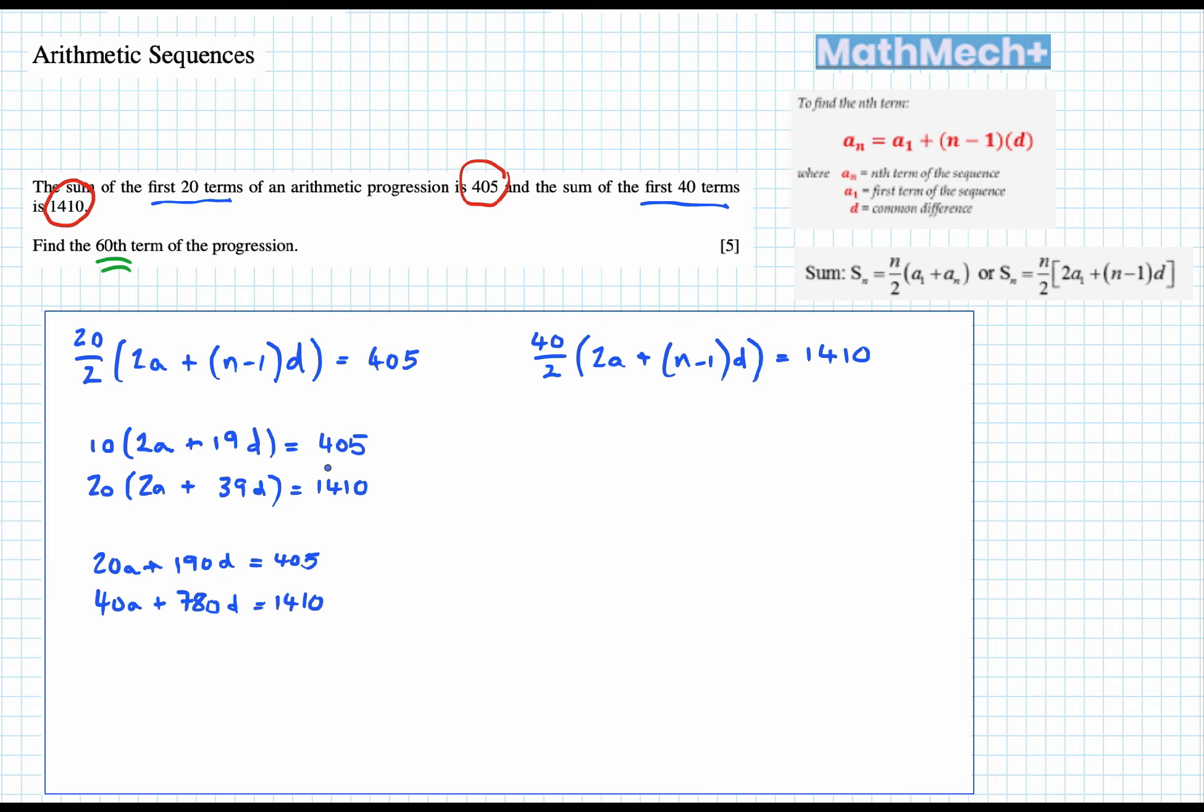What we're going to do next is use simultaneous equations. What's the easiest pathway? Just doing this one times 2, and so you should get 40a plus 380d equals 810. We've got the same sign, so subtract. When you subtract them you'll get 400d exactly.